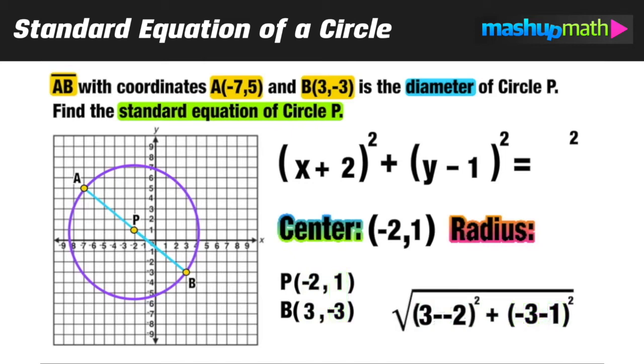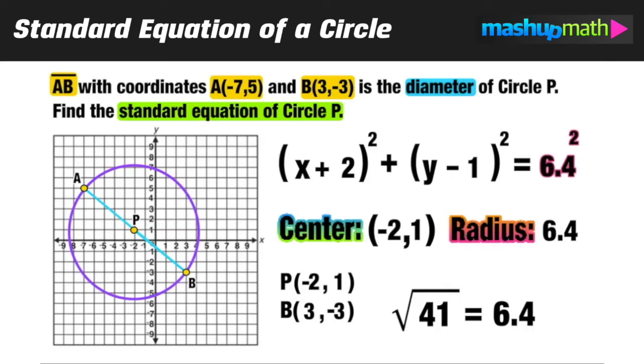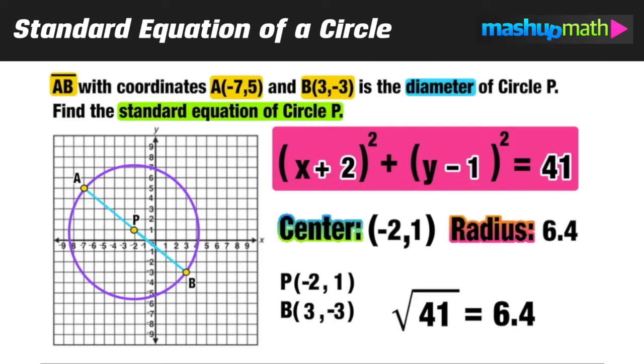On the left side in parentheses 3 minus negative 2 becomes positive 5. On the right side negative 3 minus 1 equals negative 4. Squaring those will lead us to 25 plus 16 which equals 41. And the square root of 41 is approximately 6.4 which is the length of our radius. So we can push that into our formula. 6.4 squared is approximately 40.96 which we can round up to 41. And now we have the standard equation of circle P.